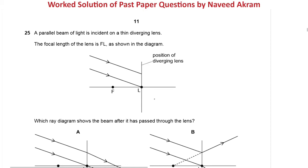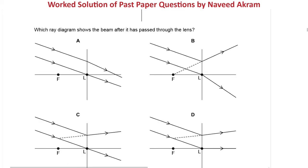The next question is from May/June 2019 paper 1 variant 1 question 25: a parallel beam of light is incident on a thin diverging lens; the focal length of the lens is FL, as shown in the diagram. Which ray diagram shows the beam after it has passed through the lens? Option A shows rays being converged, but this is a diverging lens, so A cannot be the answer.